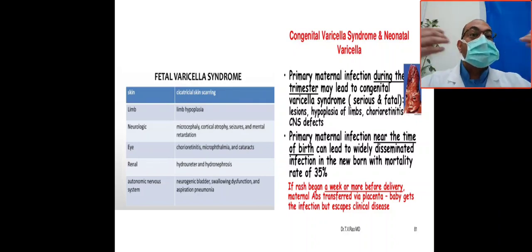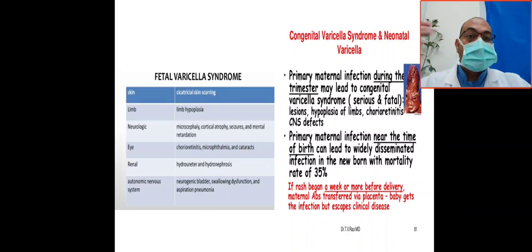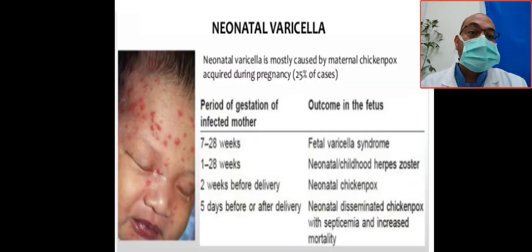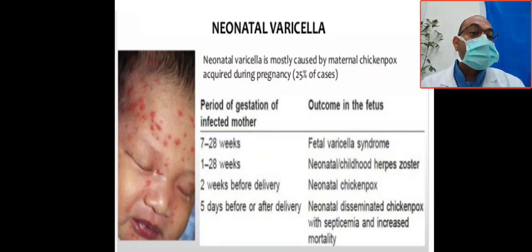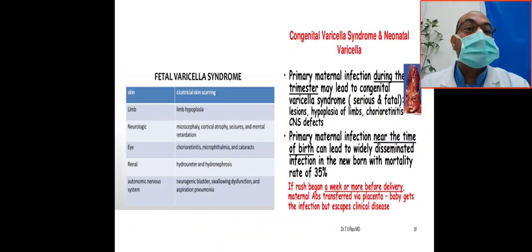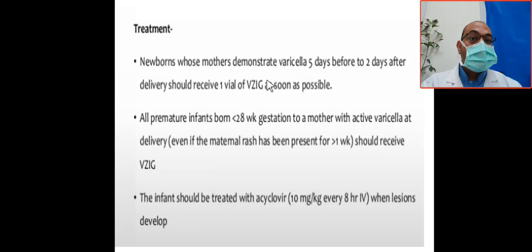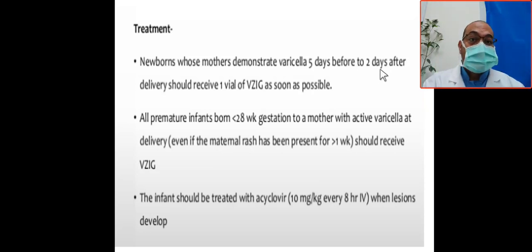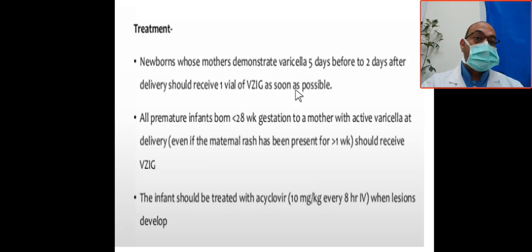Congenital varicella syndrome is fatal and serious, potentially leading to death and multiple congenital anomalies including limb hypoplasia, neurological abnormalities, microcephaly, and chorioretinitis. If it occurs just two weeks before delivery, it is neonatal chickenpox; five days before or after delivery, it is neonatal disseminated chickenpox with septicemia and increased mortality. Treatment: newborns whose mother demonstrated varicella five days before or two days after delivery should receive varicella zoster immunoglobulin as soon as possible.